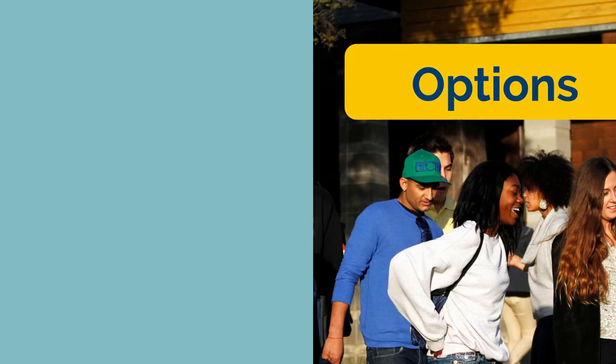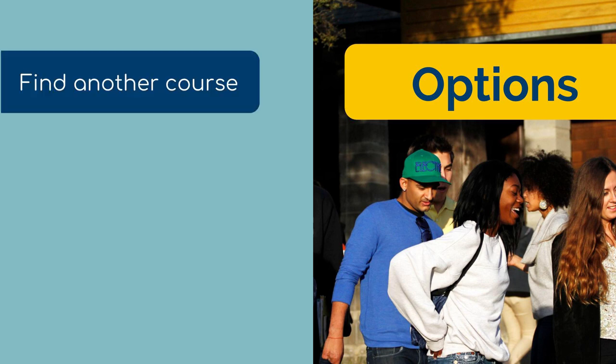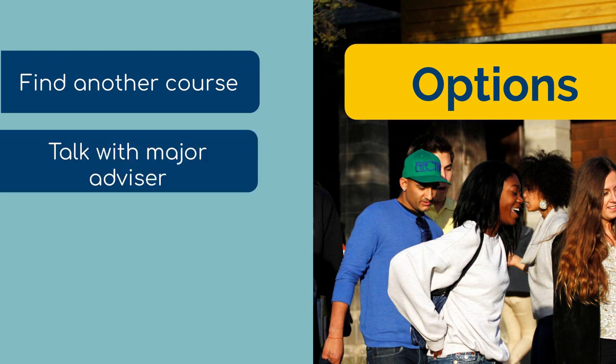If you are restricted from taking a class, there are options. If the class does not go towards your major, find another course to take. In many cases, restrictions are placed so that students in certain departments have the ability to take the class to fill a requirement. If a class does go towards your major and you are still restricted, your best option is to talk to your major advisor.